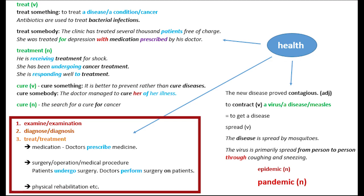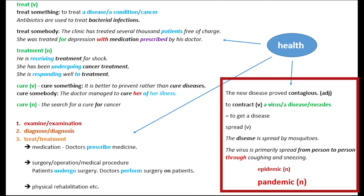Down here I have words reflecting what happens when you have a health disorder. You go to the hospital and they examine you — they carry out an examination — then they diagnose the problem, which is called a diagnosis, then they treat you, which is the treatment. Examine is a verb, examination is a noun; diagnose is a verb, diagnosis is a noun. Doctors may prescribe medicine, or you may have to undergo surgery — doctors perform surgery on patients — or maybe physical rehabilitation.